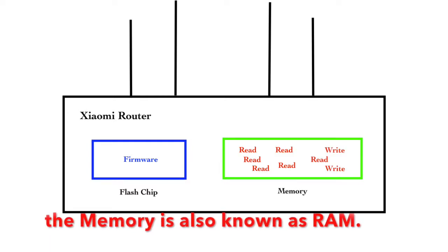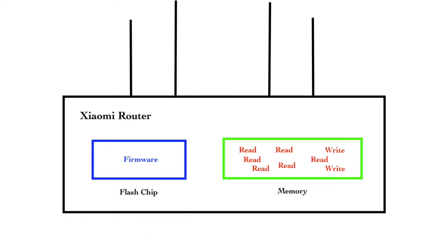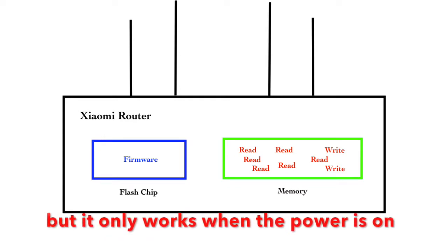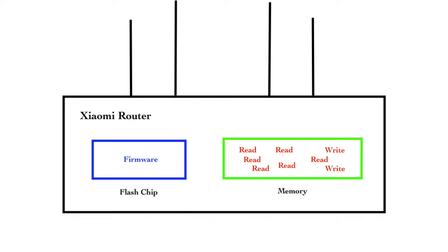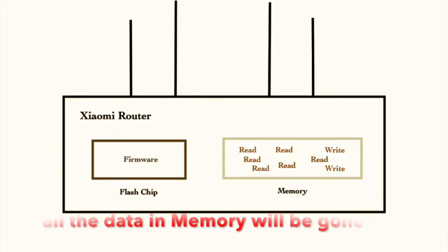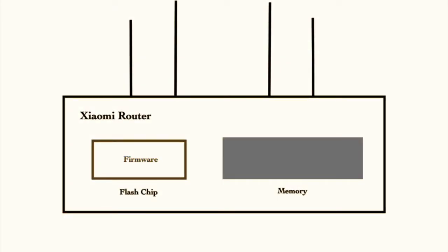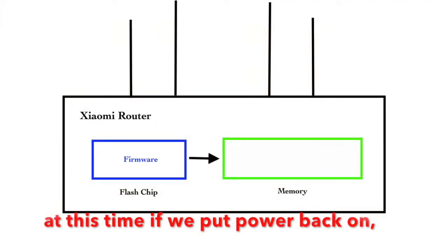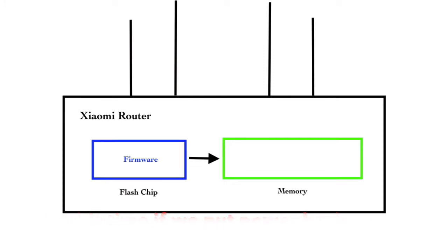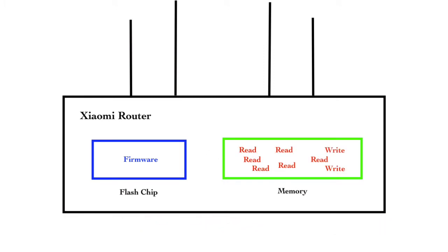The memory is also known as RAM. The memory is fast, but it only works when the power is on. If the device loses power, then all the data in memory will be gone. If we put the power back on, the router will load data into memory again from flash storage.